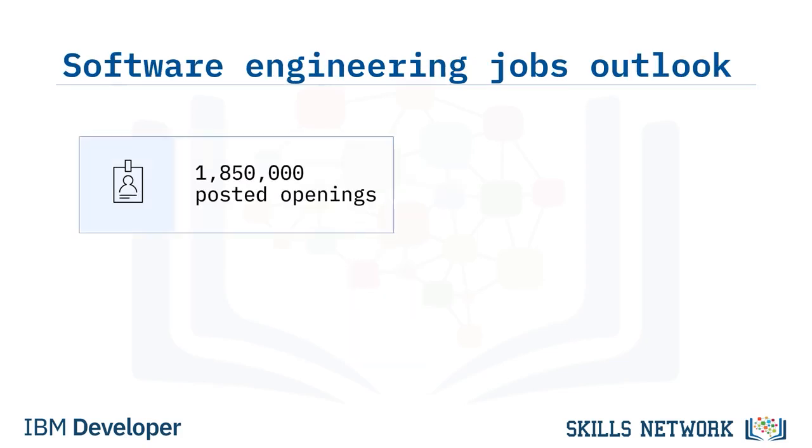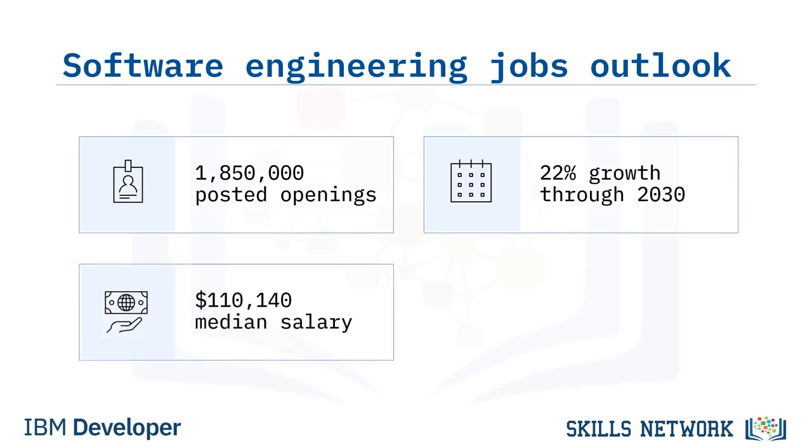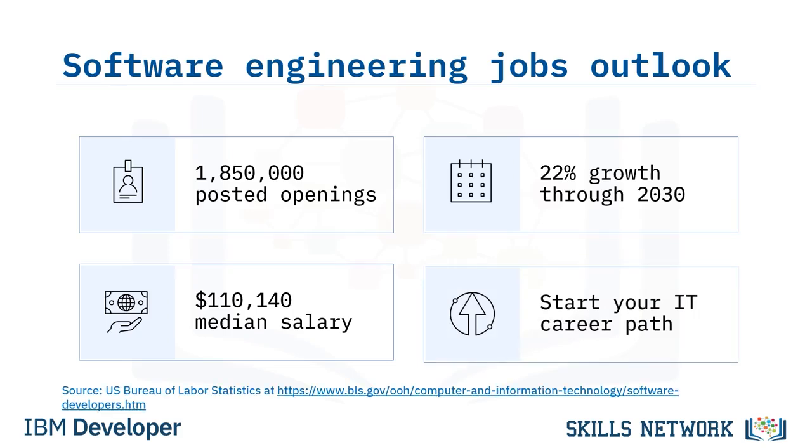According to the most recent U.S. Bureau of Labor Statistics report, about 1,850,000 software engineer-type jobs are posted annually in the U.S. alone, and job growth in the industry is projected to increase 22% through 2030. At the time of this course publication, the median U.S. software developer specialist salary is 110,140 U.S. dollars annually, and per-hour pay is almost 53 U.S. dollars. Software engineering jobs are also a great way to start on your path to a high-paying career in information technology.